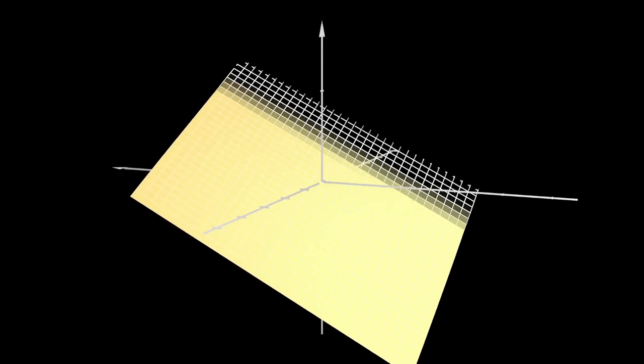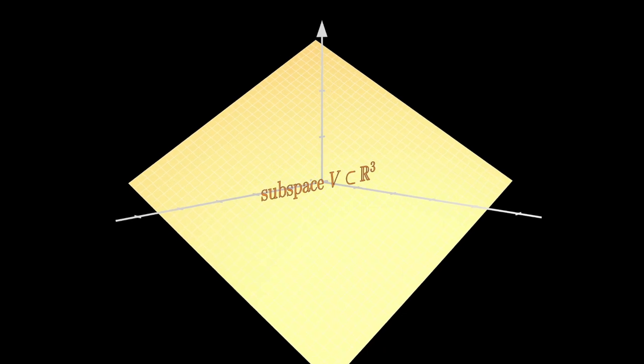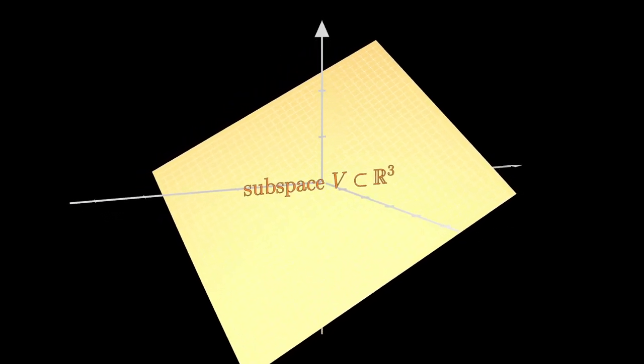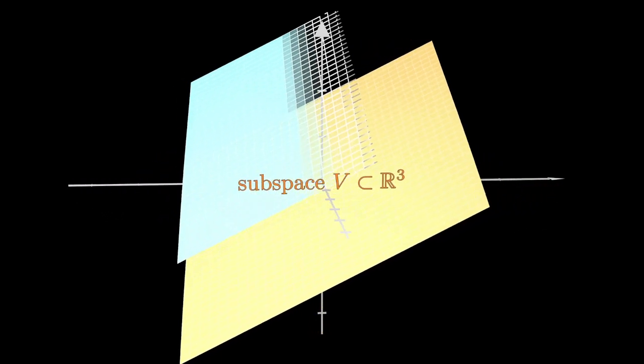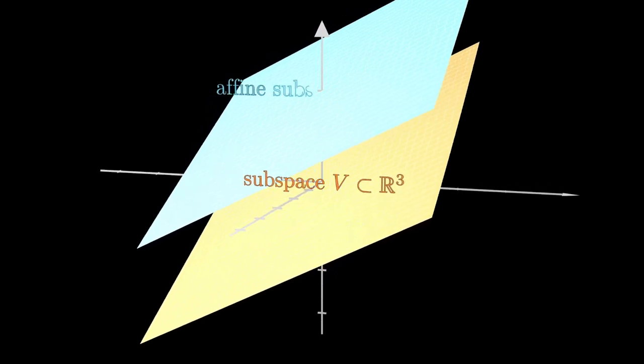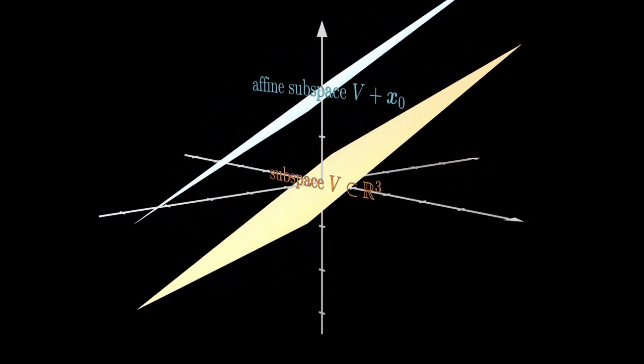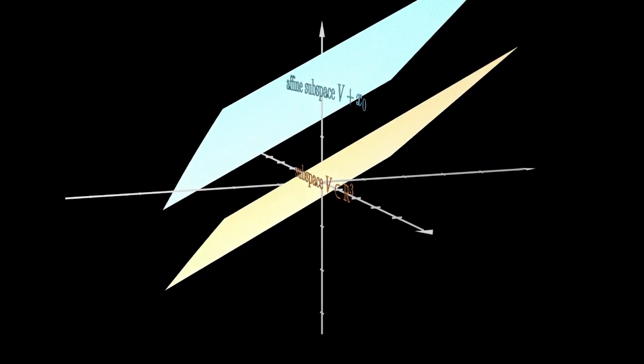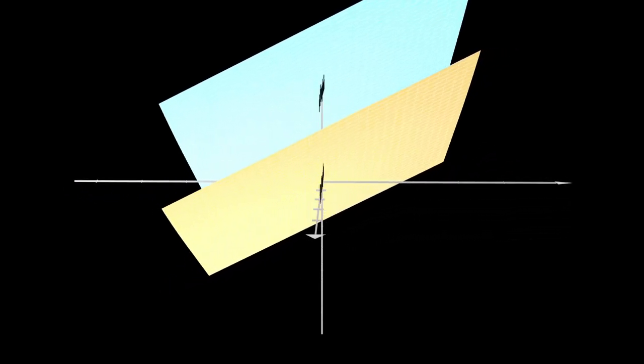Not surprisingly, the concept of an affine subspace generalizes directly to higher dimensional vector spaces. Here I'm showing you a subspace of R3, represented by a plane going through the origin, and an affine subspace would then offset that. Affine subspaces come up quite a lot in machine learning under the name hyperplanes in arbitrary dimensions.